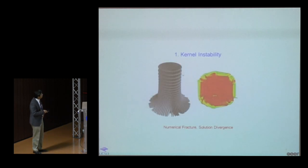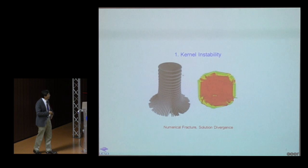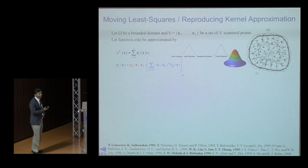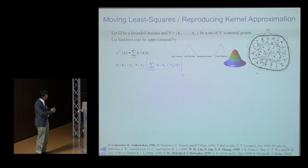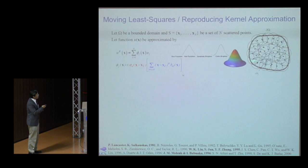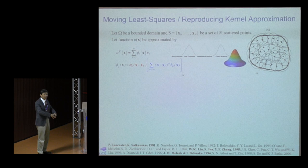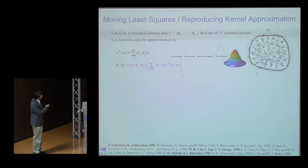To start with — kernel instability. There are many mesh-free approximations, and I'm taking moving least squares and reproducing kernel because many methods share similar features. The domain is discretized by a set of points; each point defines an open cover that gives the domain of influence, and within each open cover we construct a partition of unity.